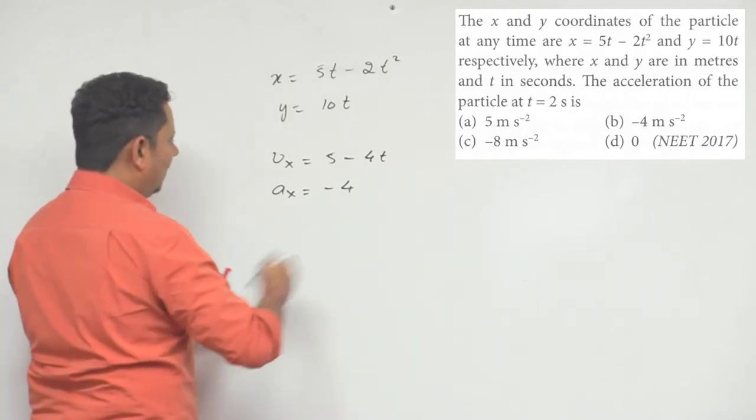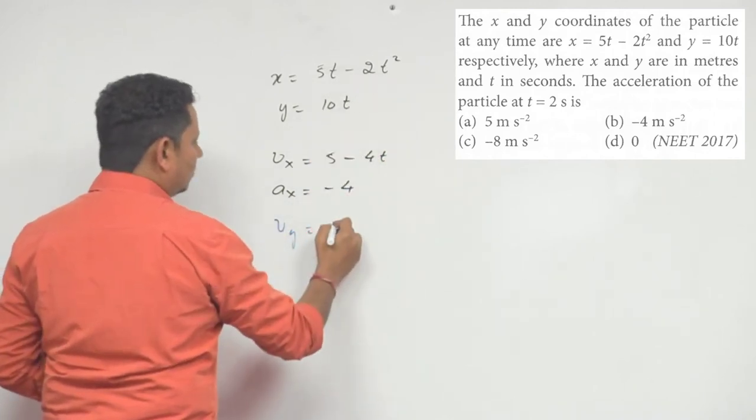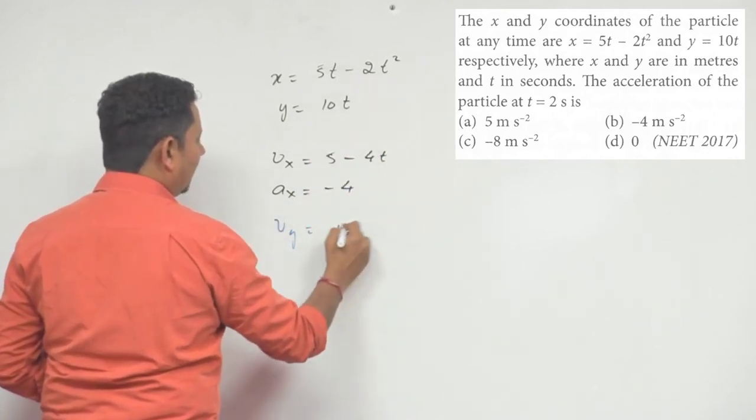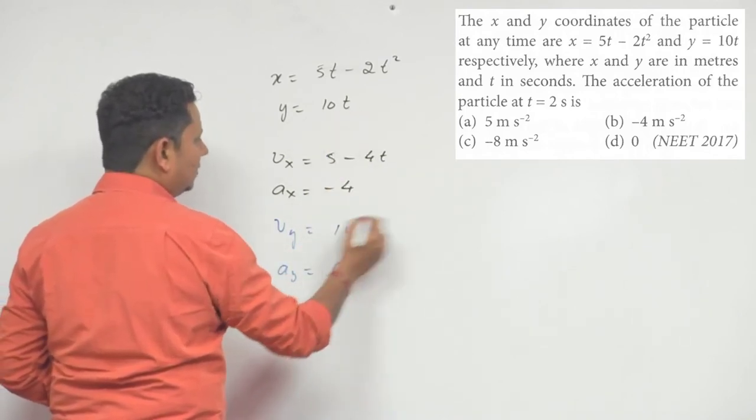Similarly, in y direction, we'll differentiate to get vy equals 10. And ay, if we differentiate 10, we get 0.